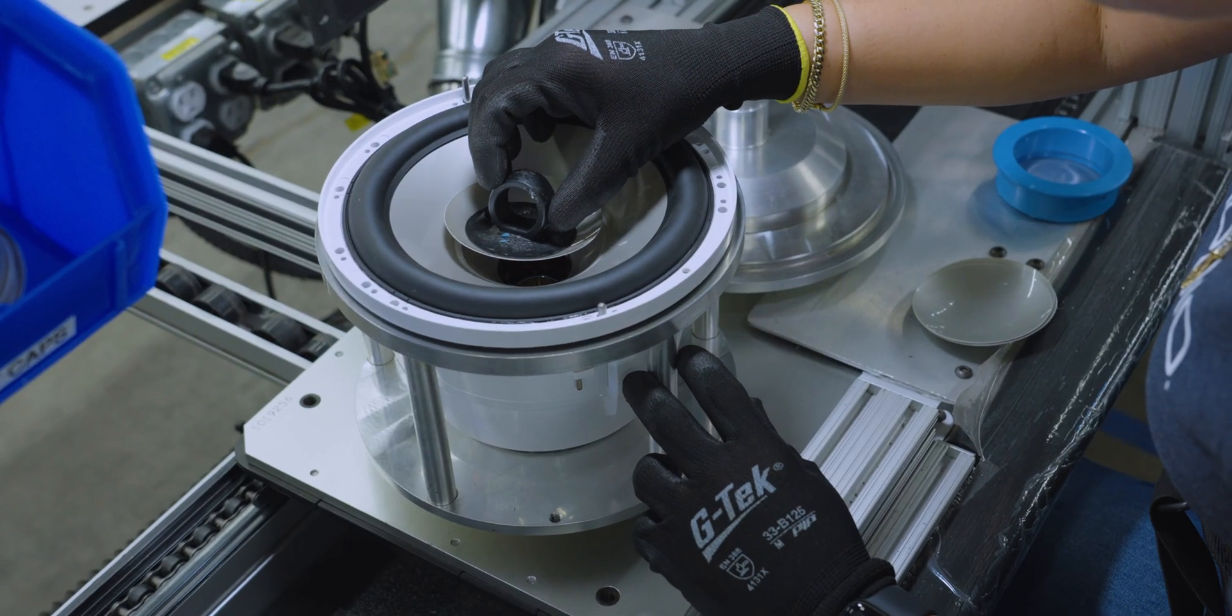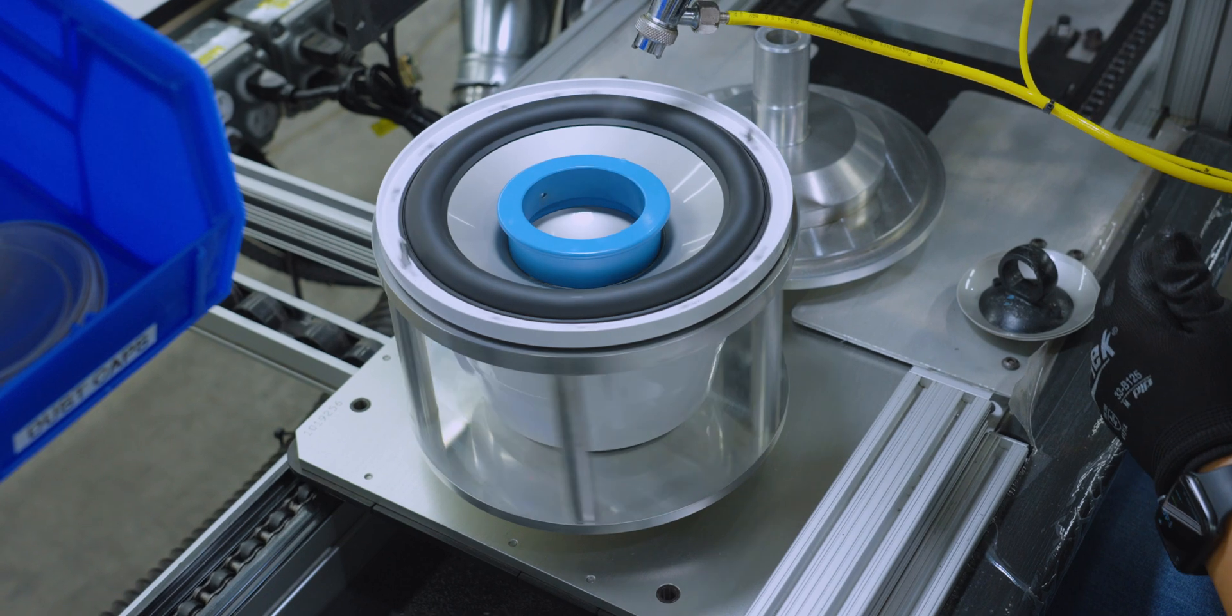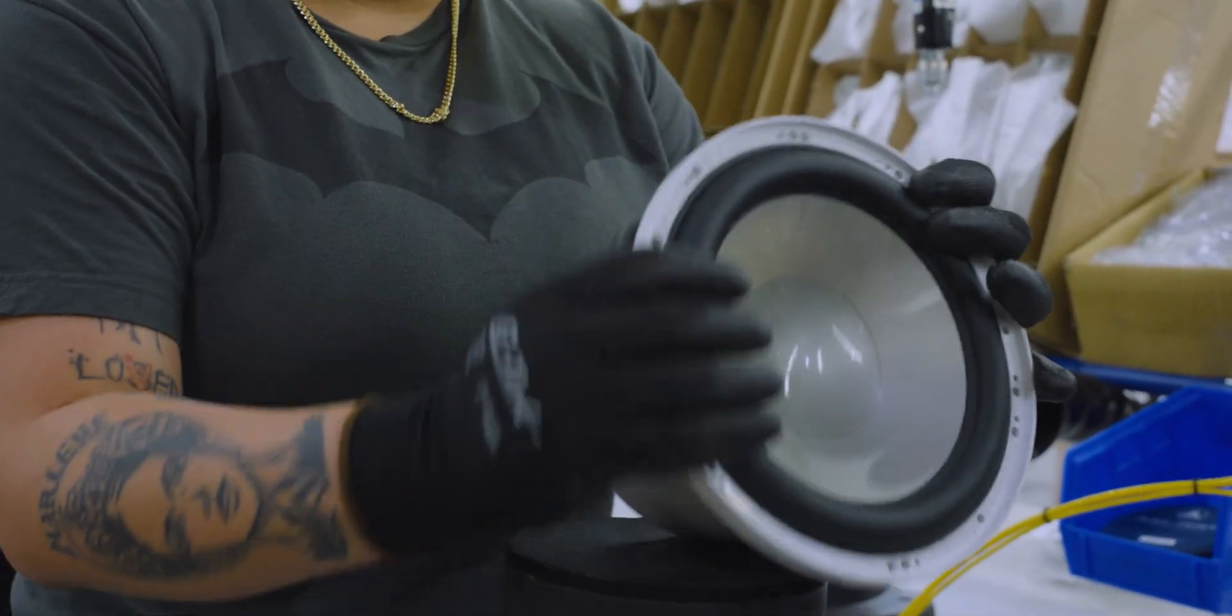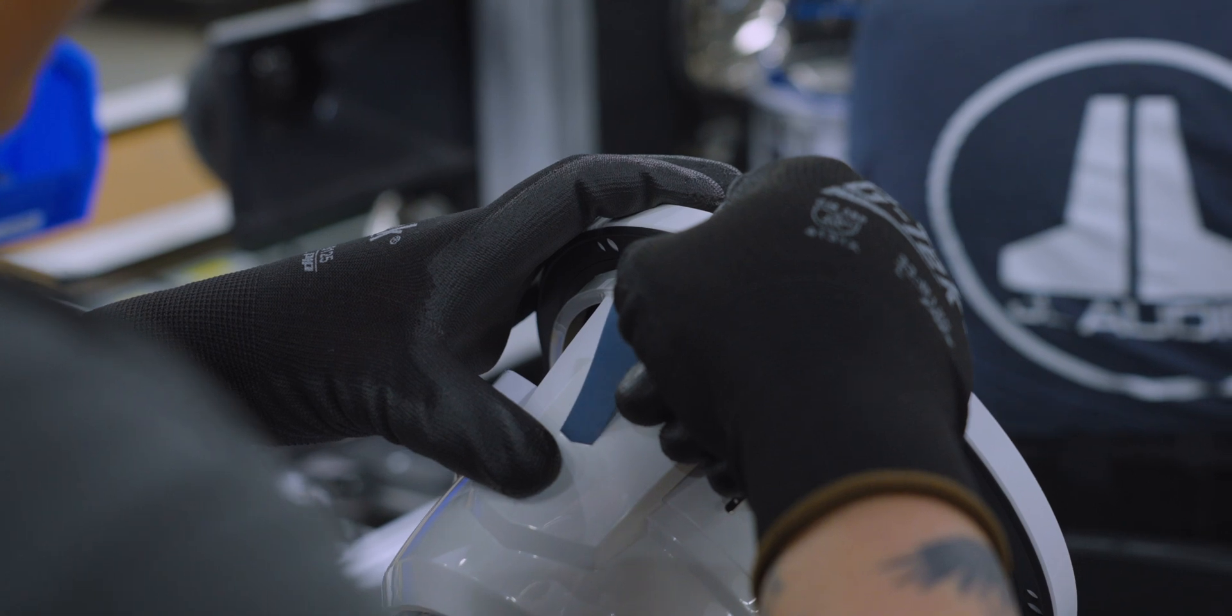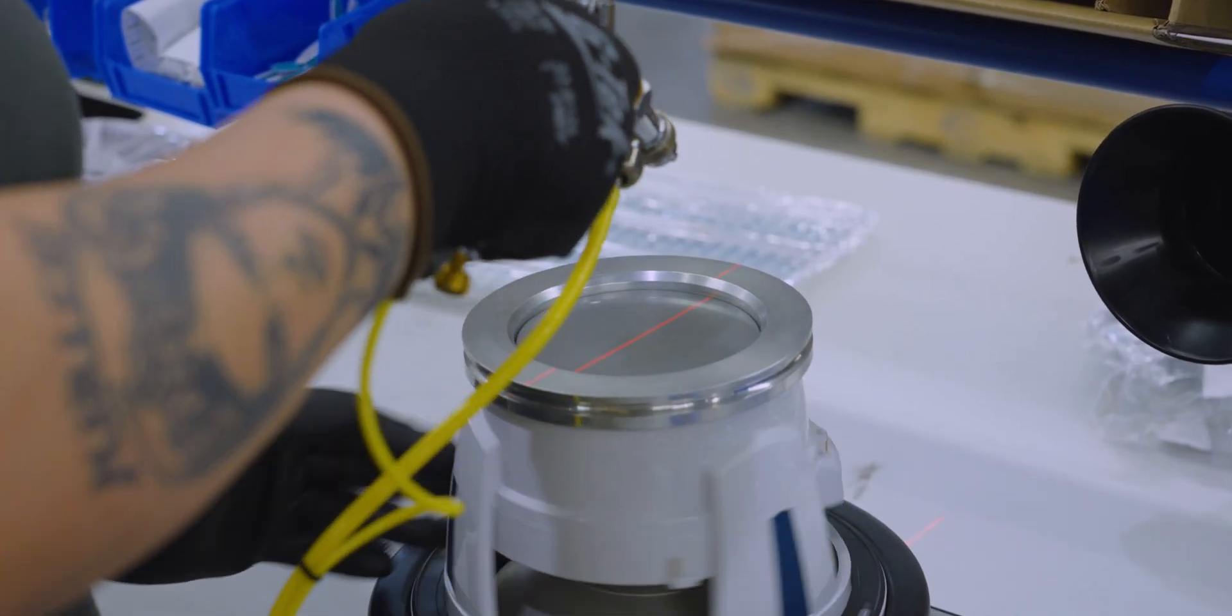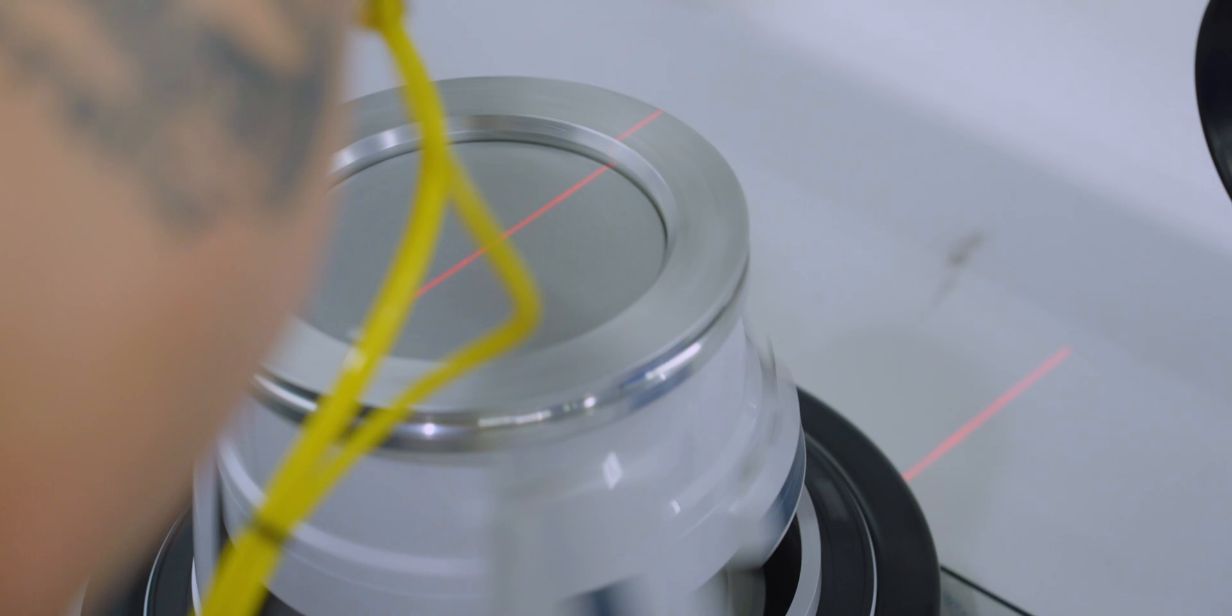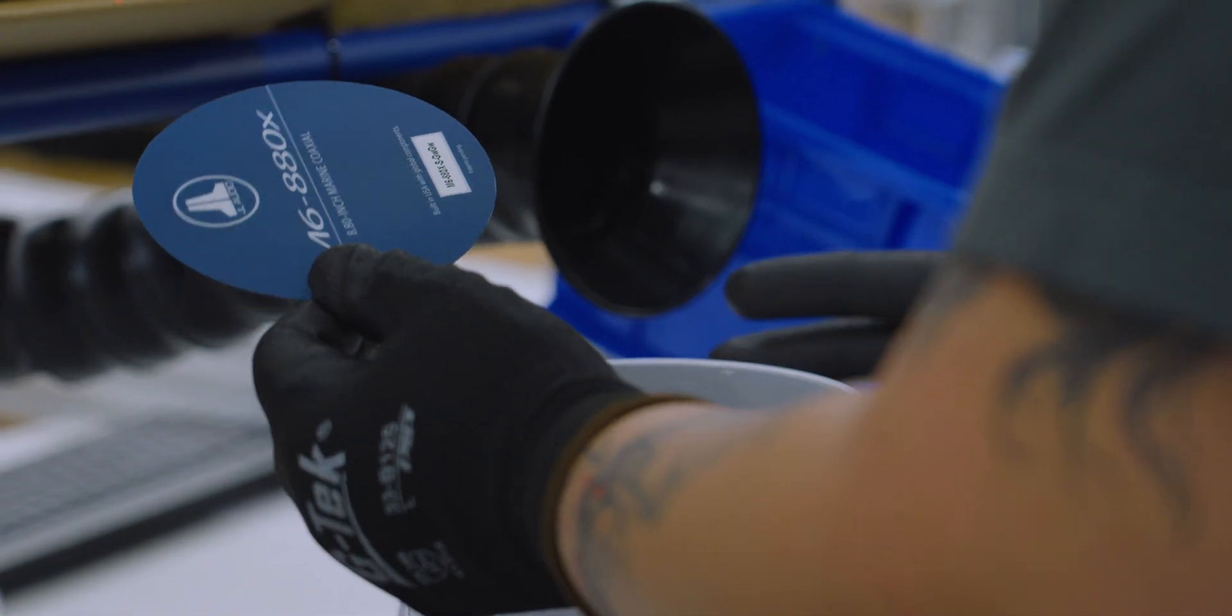The dust cap plays an essential role in doing exactly as it sounds. It keeps dust, water, and debris out of the internal areas of the speaker. Next, labels are placed over the terminals, the serial number is placed inside of the speaker, and a motor cover is installed on the bottom, sealing the motor assembly.